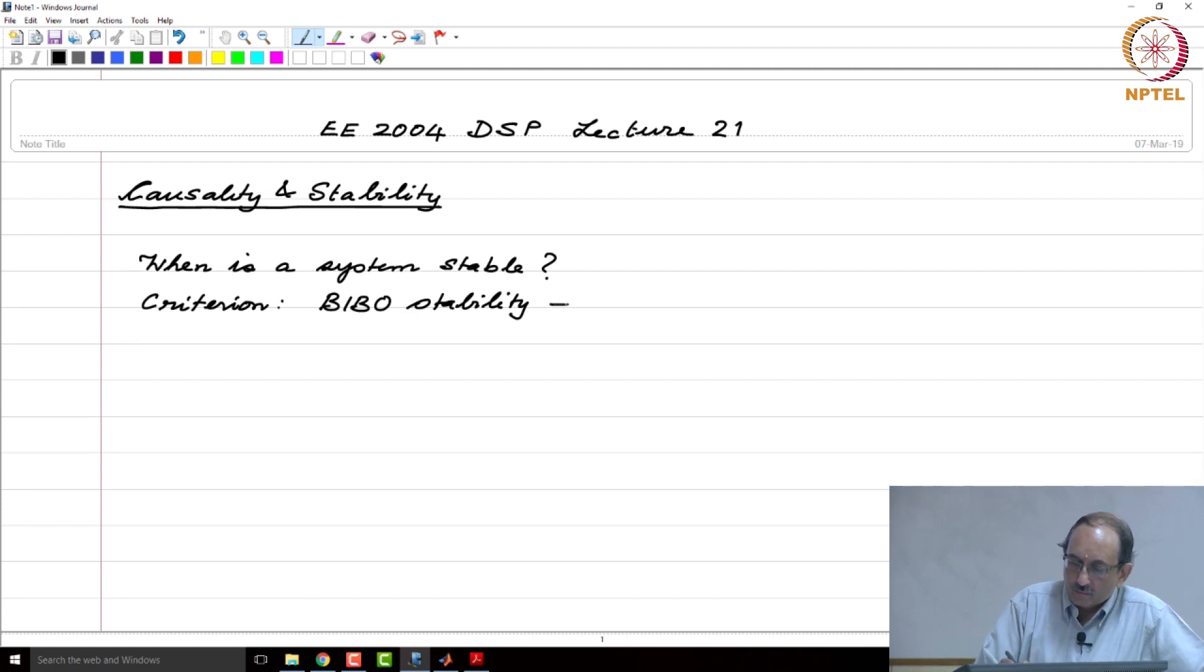This implies that you need the impulse response summed up over all n to be less than infinity. That is, H of n must belong to the class of L1. We have already seen that this implies e to the j omega must belong to the region of convergence.